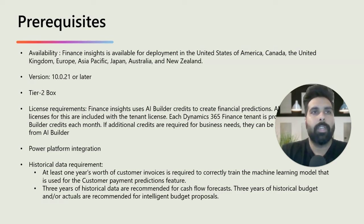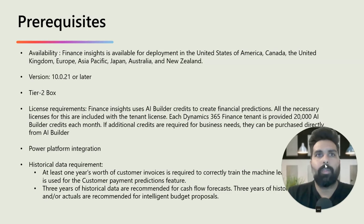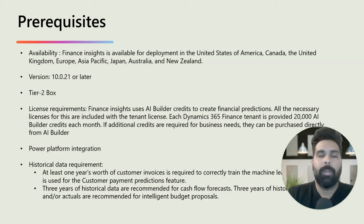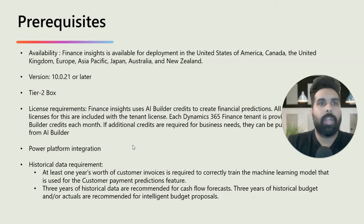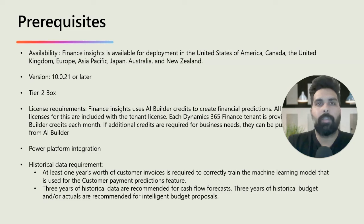You need to have a Tier 2 box deployed for this feature. For licensing, financial insights uses AI Builder credits to create financial predictions — all necessary licenses are included with the tenant license, and each D365 Finance tenant is provided with 20,000 AI Builder credits every month. If additional credits are required, the organization can purchase them directly from AI Builder. You also need the Power Platform integration and Power Platform Admin Center deployed, with LCS connected.